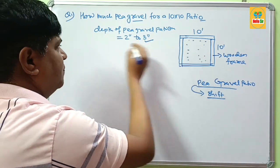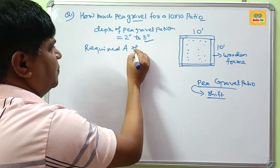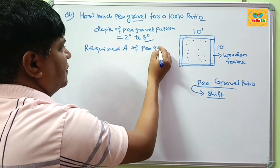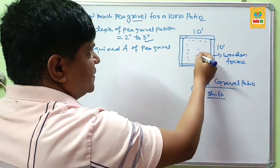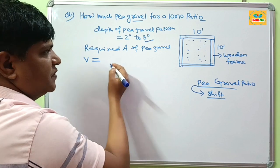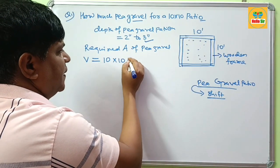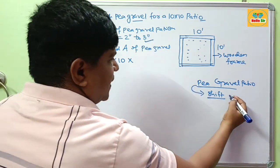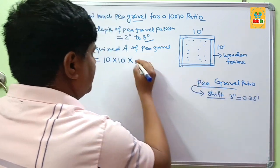Then total required amount of big gravel is the volume of this patio. If you want to calculate volume of this patio, you have 10 foot by 10 foot, and their depth is 3 inches, and 3 inches is equal to 0.25 feet.